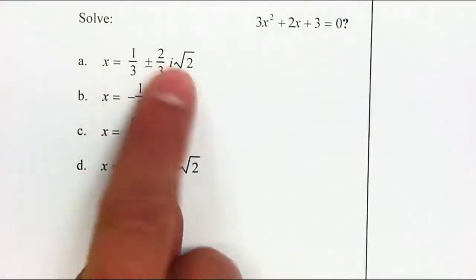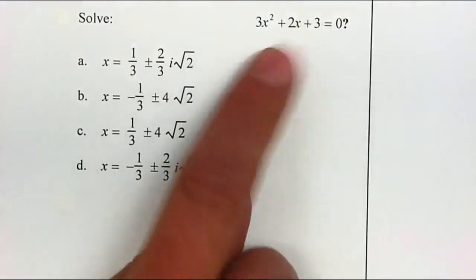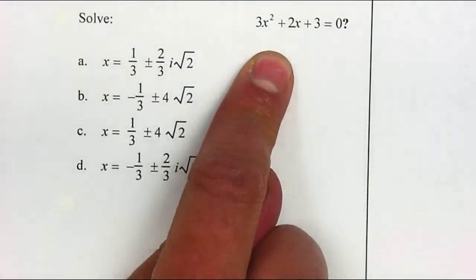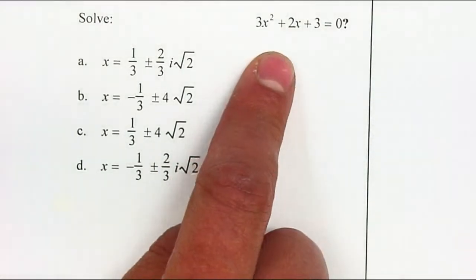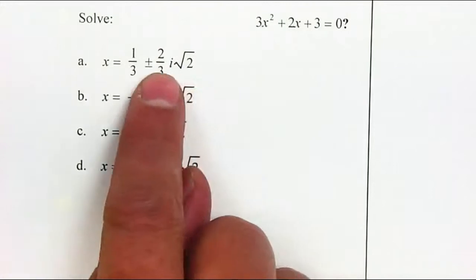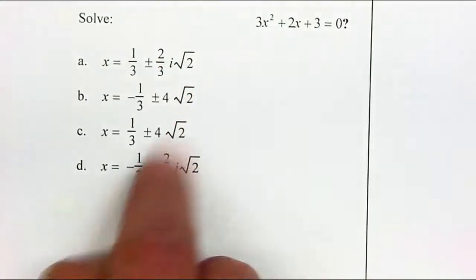Now by looking at my answers, this cannot be factored. Otherwise they'll give you nice little answers like five or one-half. But whenever you have such complex answers, we know that we can't factor it.